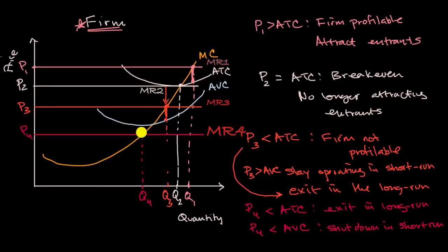And then the last scenario, of course, is P sub four where the price gets so low that it just doesn't make sense to even operate another moment.